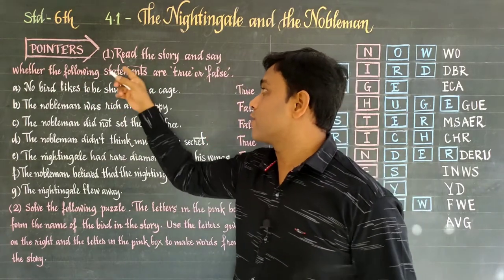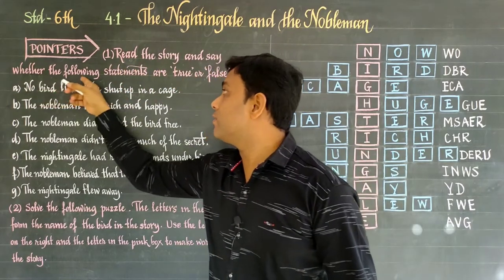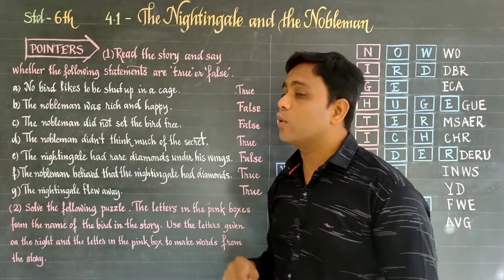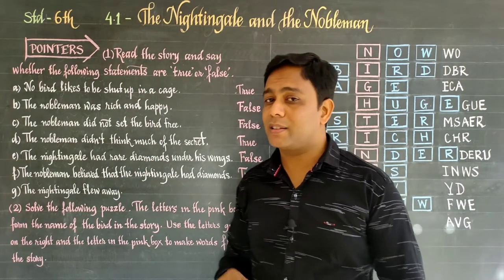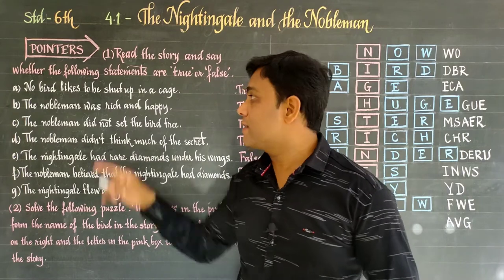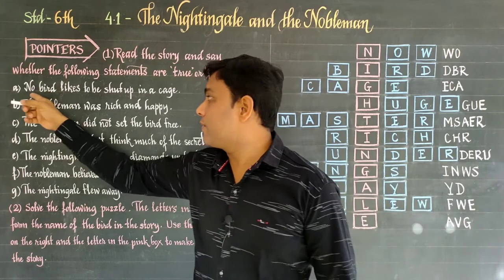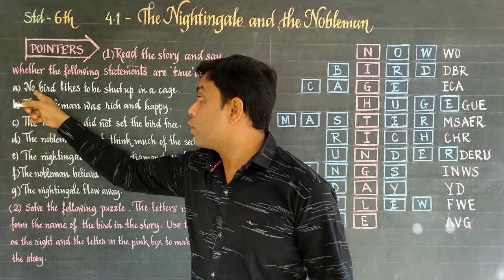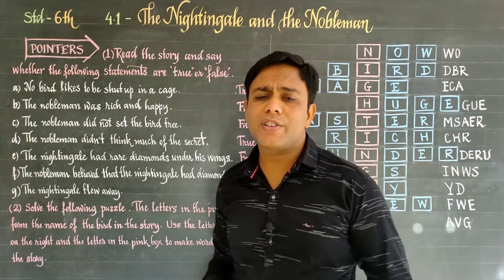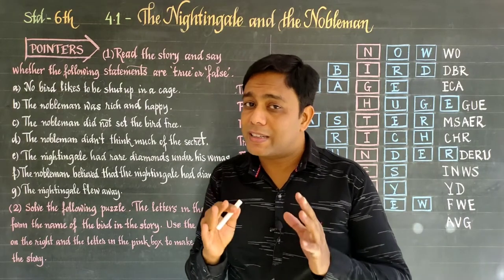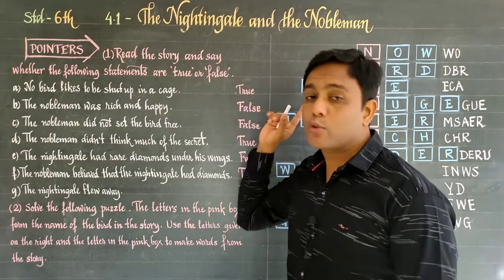Let's see the first question: read the story and say whether the following statements are true or false. The first statement is: no bird likes to be shut up in a cage. No bird wants to be kept in a cage, so this statement is true.